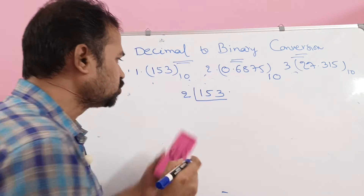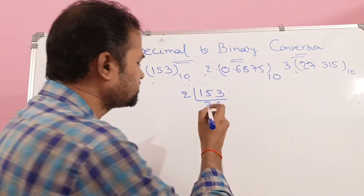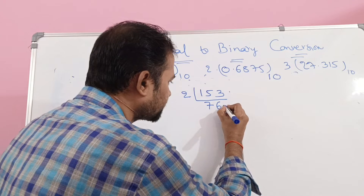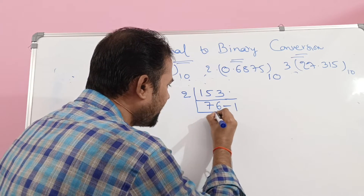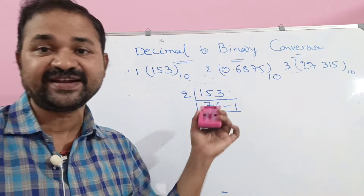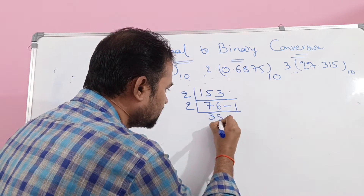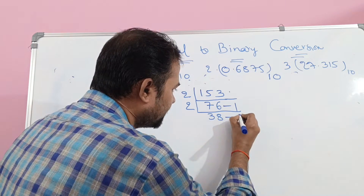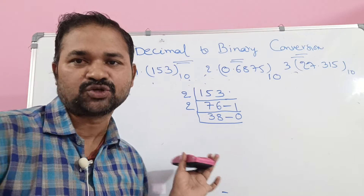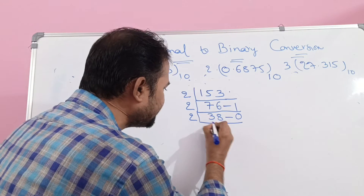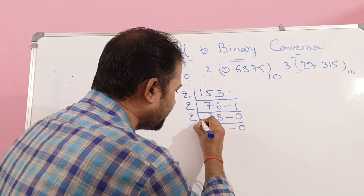153 divided by 2: 2 times 76 is 152, so 76 is the quotient and 1 is the remainder. Again divide 76 by 2: 2 times 38 is 76, so quotient is 38 and remainder is 0. Next, again divide 38 by 2: 2 times 19 is 38, so 19 is the quotient and 0 is the remainder.